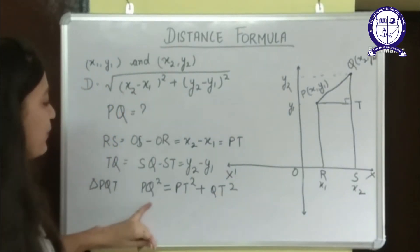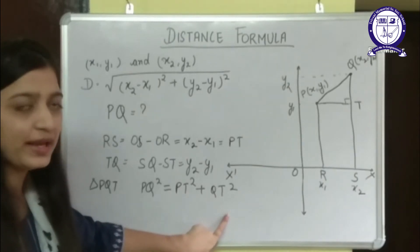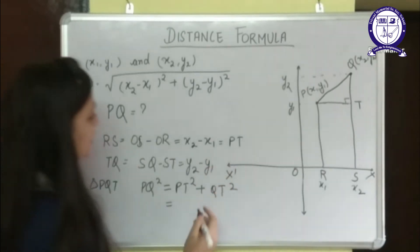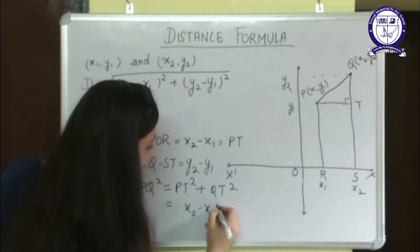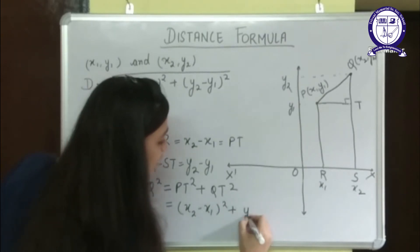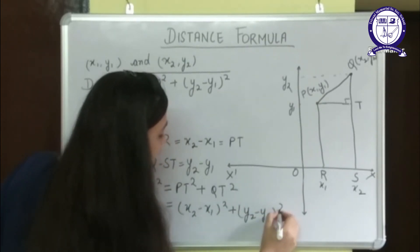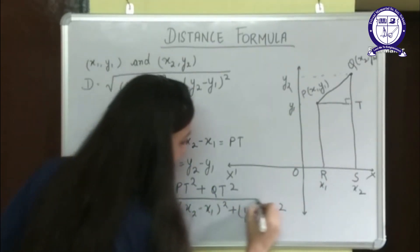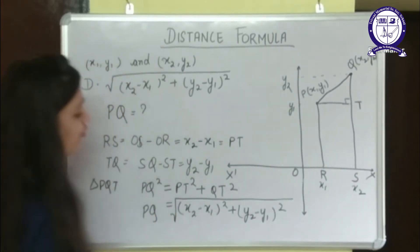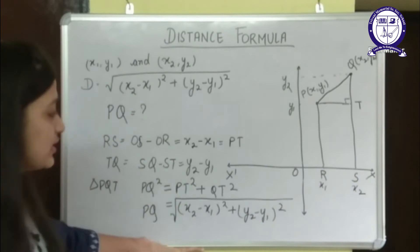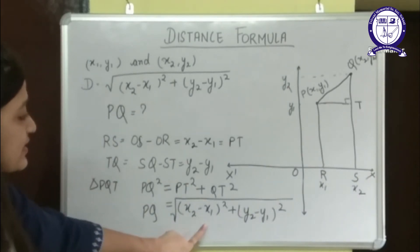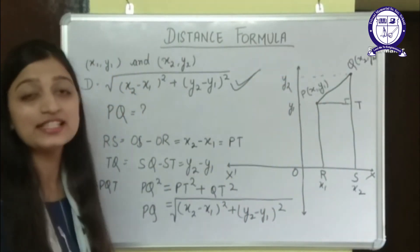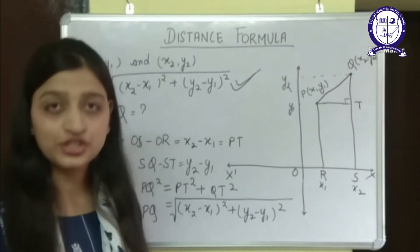This is the Pythagoras theorem: hypotenuse squared equals perpendicular squared plus base squared. Putting the values of PT and QT: PQ squared equals (x2 minus x1) squared plus (y2 minus y1) squared. Taking the square root on both sides, we get the value of PQ. So this is how the distance formula is derived, and this is exactly what our distance formula looks like.